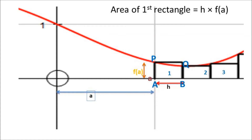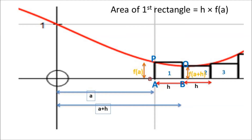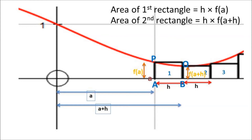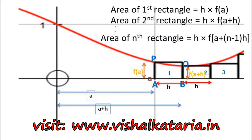For the second rectangle, the width is again h, and the height is the y-coordinate of point Q, which is f(a + h), because the x-coordinate of point Q is a + h, so the y-coordinate must be f(a + h). Hence the area of the second rectangle is h × f(a + h). Similarly, the dimensions of the nth rectangle are: width = h and height = f(a + (n−1)h).